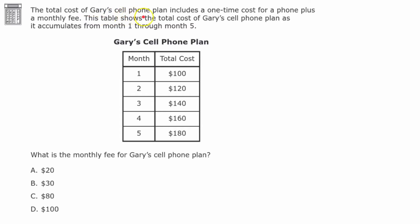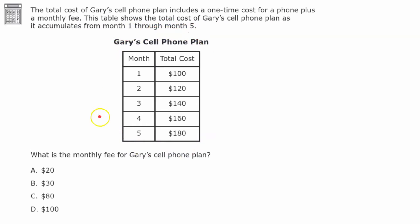The total cost of Gary's cell phone plan includes a one-time cost for a phone plus a monthly fee. This table shows the total cost of Gary's cell phone plan as it accumulates from month one through month five. What is the monthly fee for Gary's cell phone plan? Go ahead and pause now and come back to check your work.